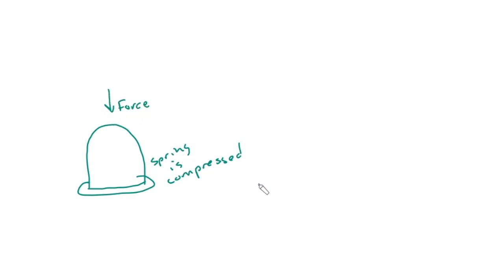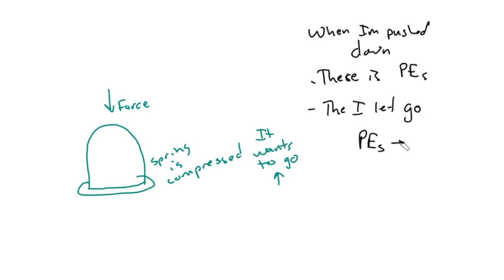Now, what does that toy want to do? It wants to go up. So when I'm pushed down, let's look at what's happening. When I'm pushed down, there is PEs. Then I let go. PEs is converted to KE, right? It's really fast when it leaves the table. Then gravity slows it and then KE becomes delta PE.